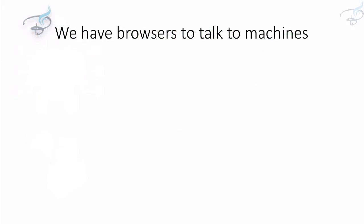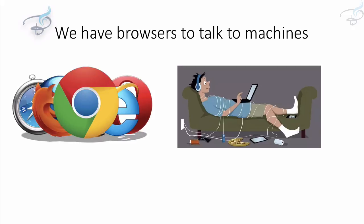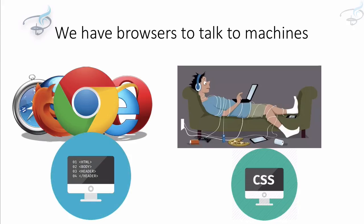We have browsers to talk to machines. Humans can talk to a machine by using the browser. Whenever you request any page via browser, you will get the data along with HTML and CSS, because HTML and CSS are designed to make the page look more readable for humans. But machines need machine-readable data.